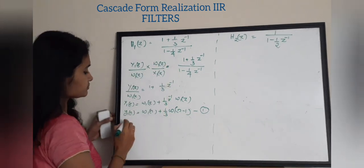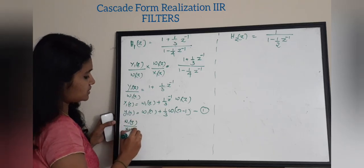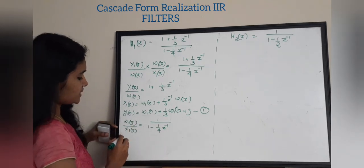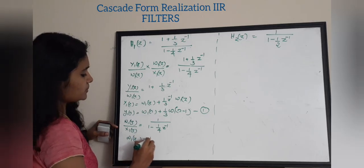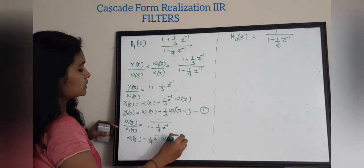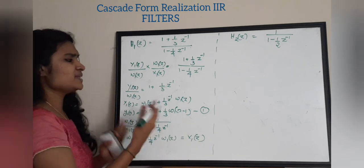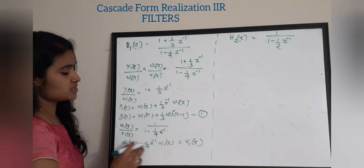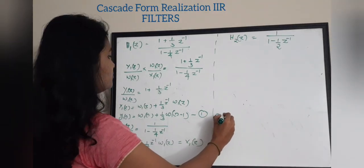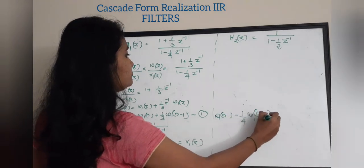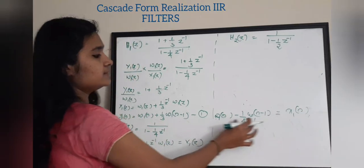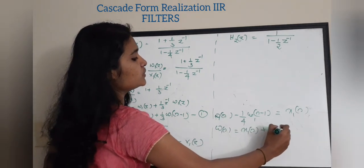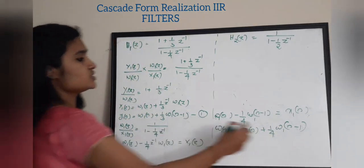Now take the second part: W1(z)/X1(z) = 1 / (1 − 1/4 z⁻¹). Cross-multiplying: W1(z) − 1/4 z⁻¹ W1(z) = X1(z). Taking the inverse Z-transform: w1(n) − 1/4 · w1(n−1) = x1(n). Rearranging: w1(n) = x1(n) + 1/4 · w1(n−1). This is your second equation to be realized.